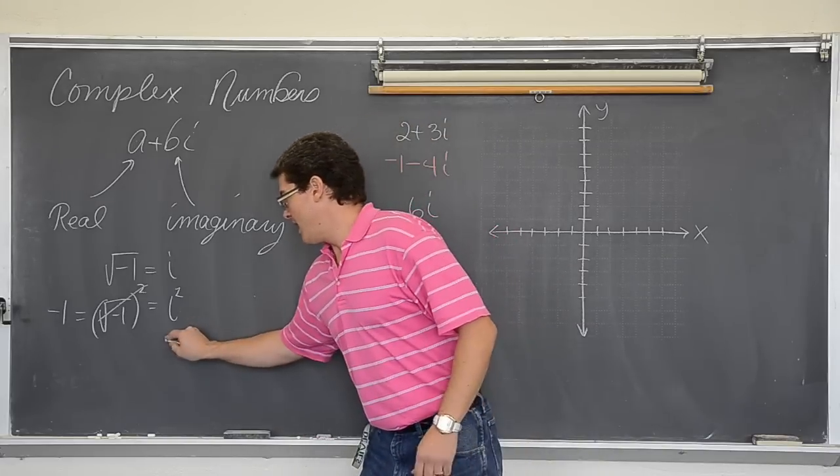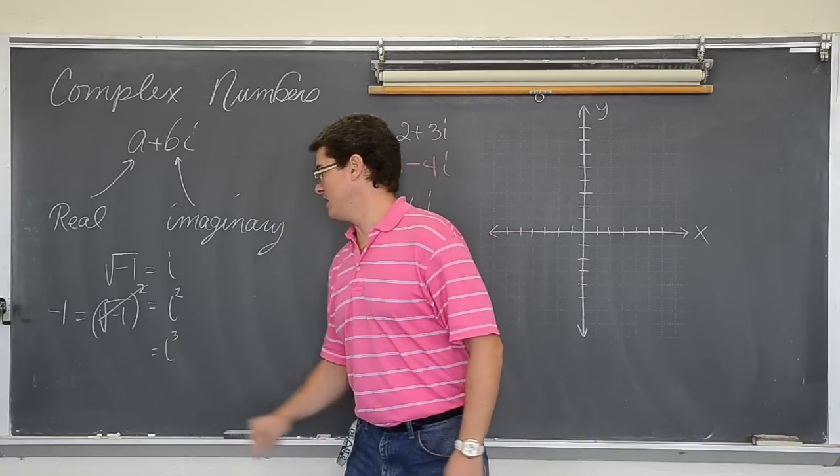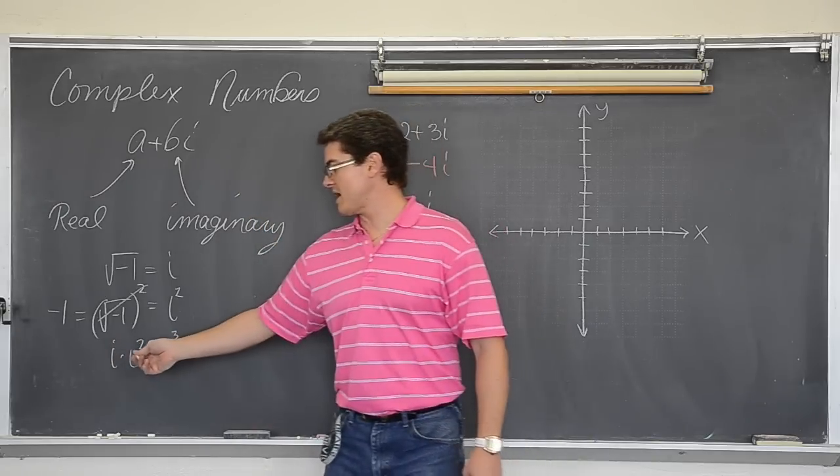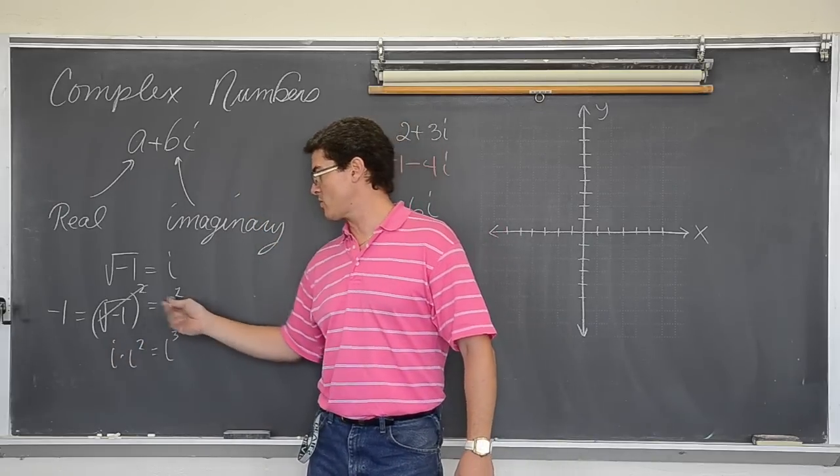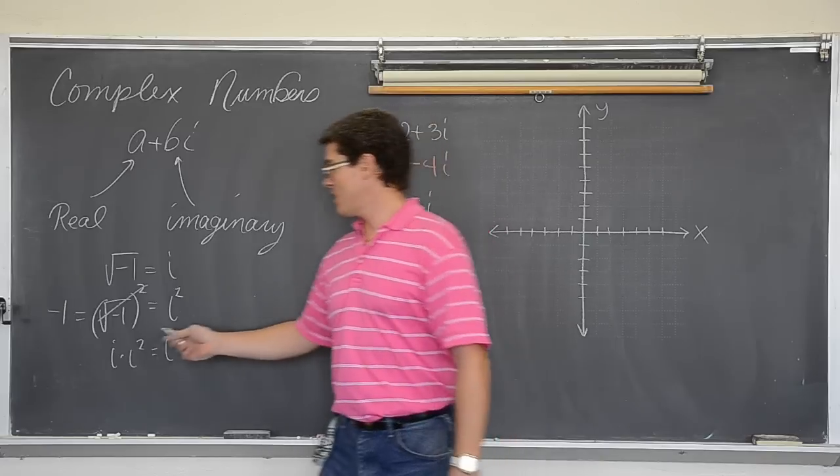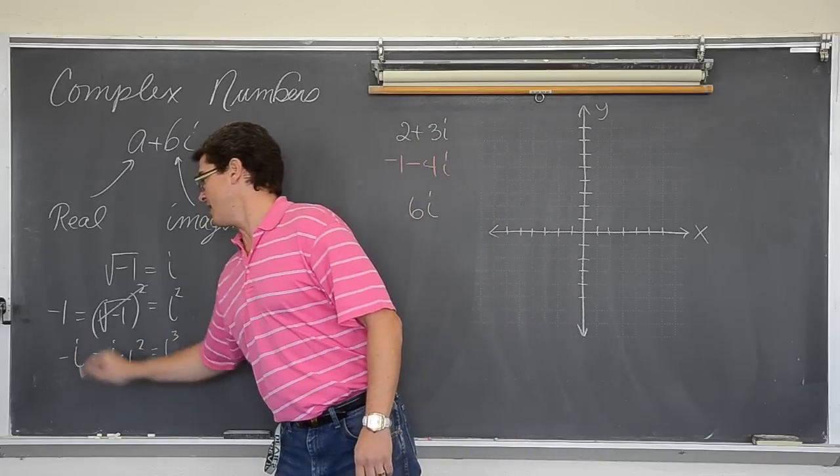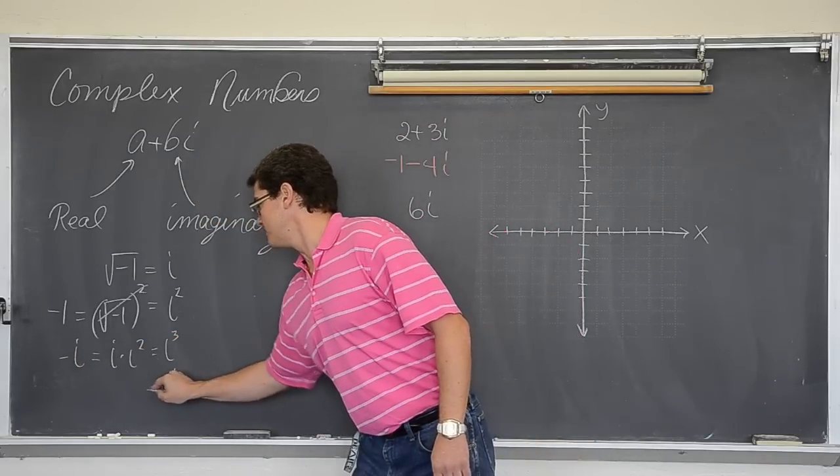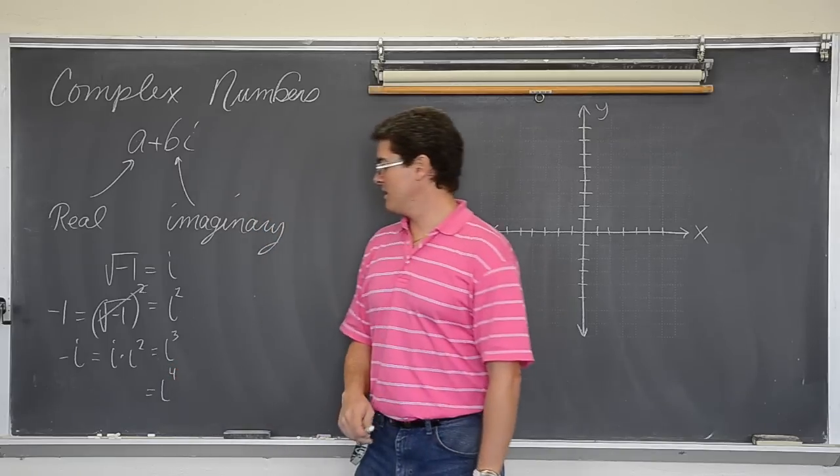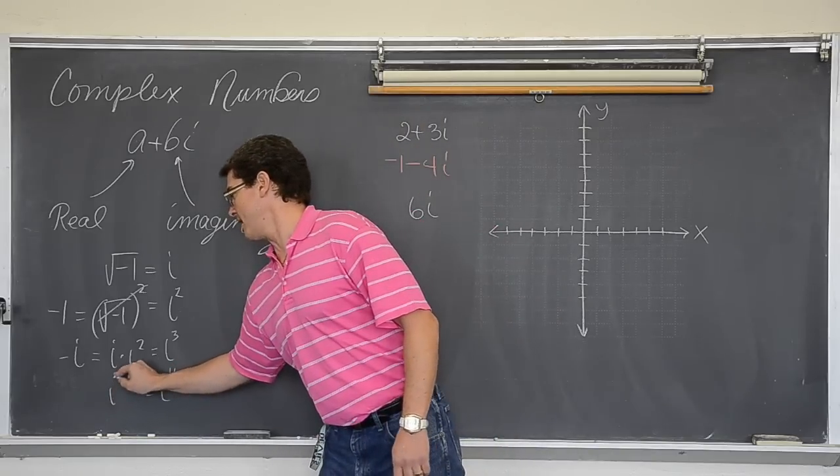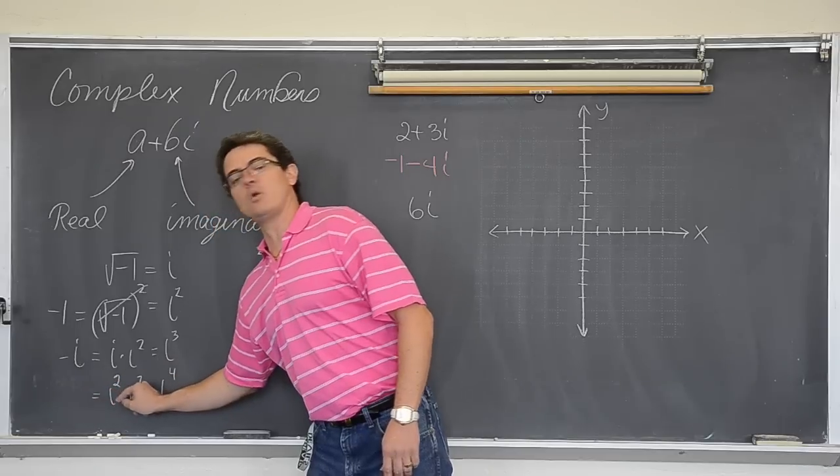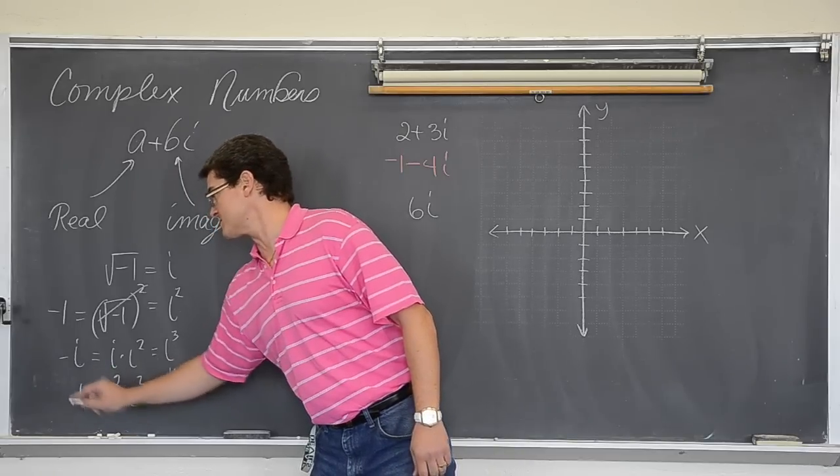i to the third is i times i squared. Well we just said i squared was what? i squared was negative one. So i to the third is negative i. And then i to the fourth is, well that is i squared times i squared, which is negative one times negative one, which is positive one.